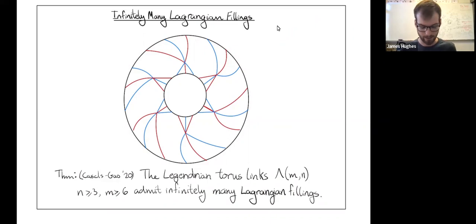If I concatenate that cylinder onto existing exact Lagrangian fillings, then I get distinct fillings, so non-Hamiltonian isotopic fillings.